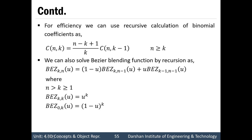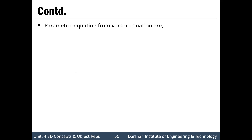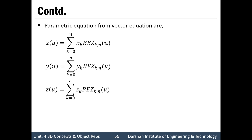This recursive calculation will stop at either of the two base terms. When those terms are reached, we put in their values and then reverse the recursion steps, and finally after completion of recursion we get the answer for BEZ(k,n)(u). The parametric equations separate the x, y, and z components: x(u) equals the summation from k=0 to n of xk times BEZ(k,n)(u), and similarly for the y and z components.